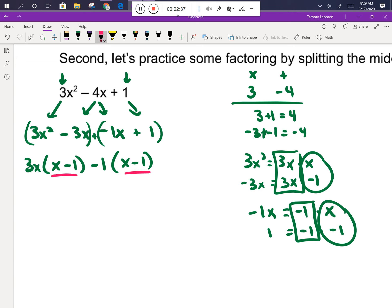And notice, these both have an x - 1. So I can factor out the x - 1, which is their greatest common factor in the form of a binomial. And that leaves behind a 3x and a -1 to be their second binomial. And that's the factorization for that problem.